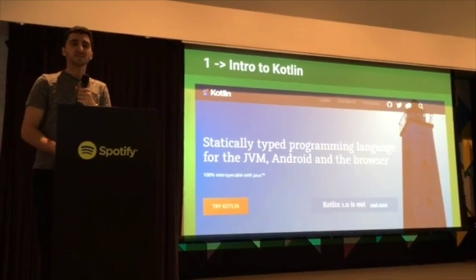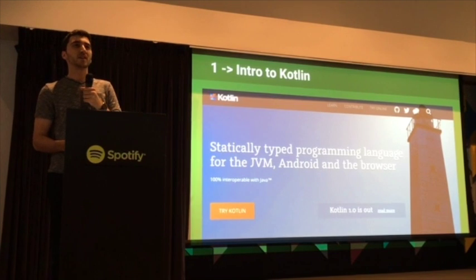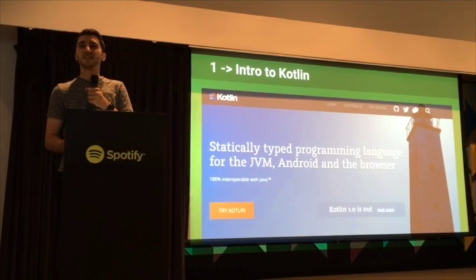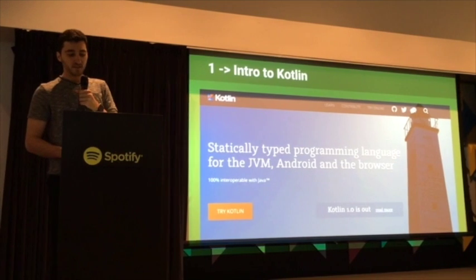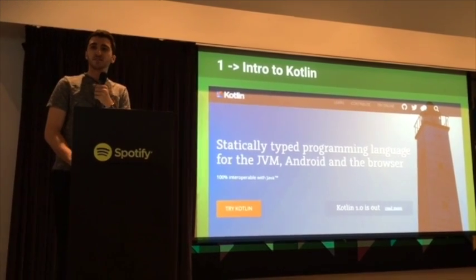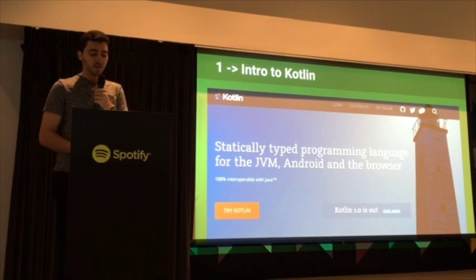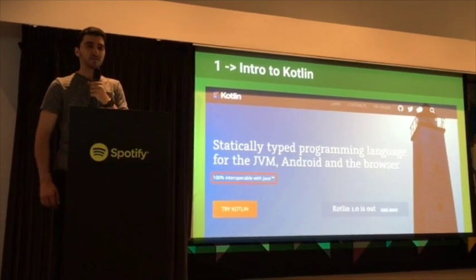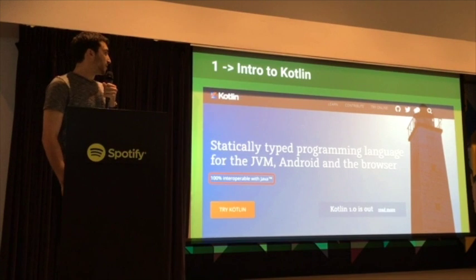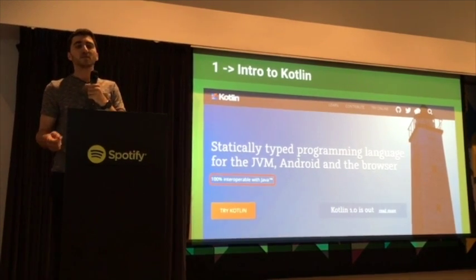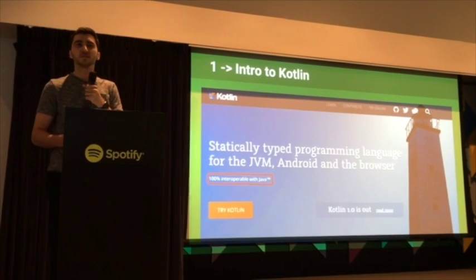Kotlin is an open source programming language developed by JetBrains, which is the company responsible for IntelliJ. It's statically typed just like Java, which means the compiler enforces types. The big call here is that it's 100% interoperable with Java, meaning you can use any Java classes or methods from within Kotlin code and vice versa.